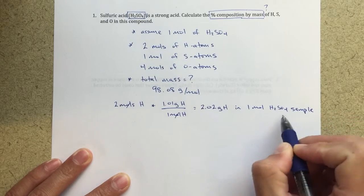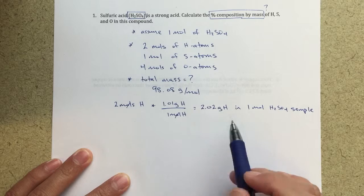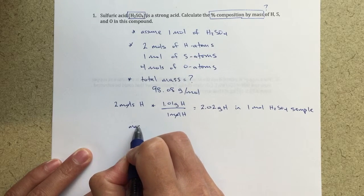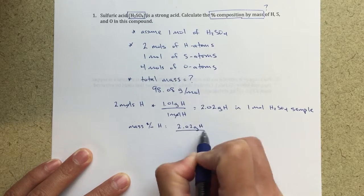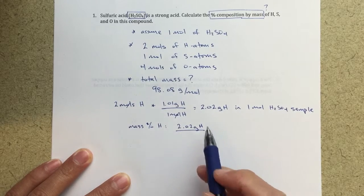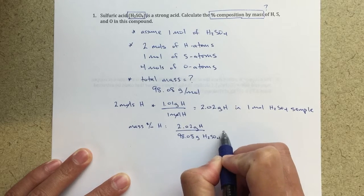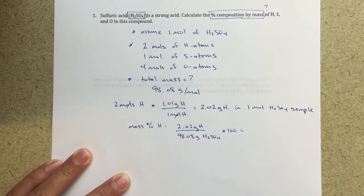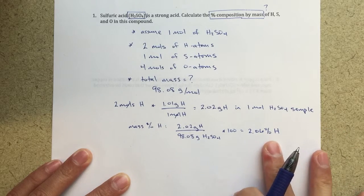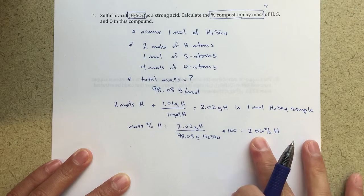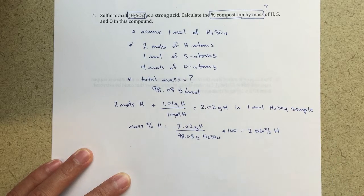So in this one mole of H2SO4, which I just assumed that I was going to talk about one mole, I will have 2.02 grams of hydrogen. Now, I can go ahead and calculate the mass percent of hydrogen, because that's going to be 2.02 grams of hydrogen, the amount of hydrogen I have in my sample, over the total mass. And the total mass is 98.08 grams of H2SO4, I'm going to multiply that by 100 to turn it into a percent, and I get a value of 2.06 percent hydrogen. So what this represents is the amount of hydrogen by percent by mass that I will have in my sample. So this H2SO4 sample, by mass, 2.06 percent of it is hydrogen atoms.